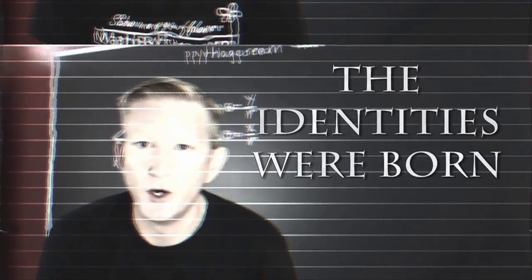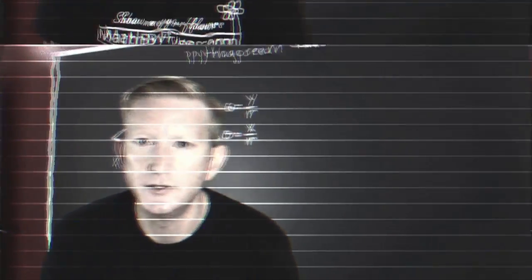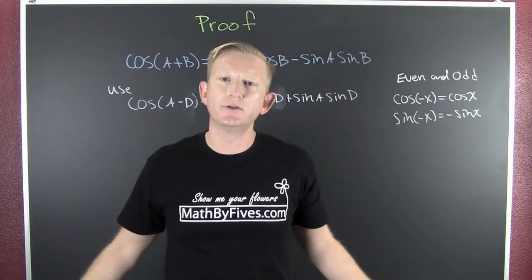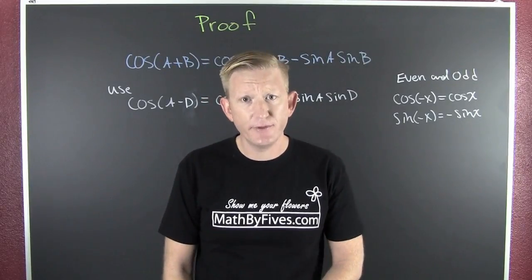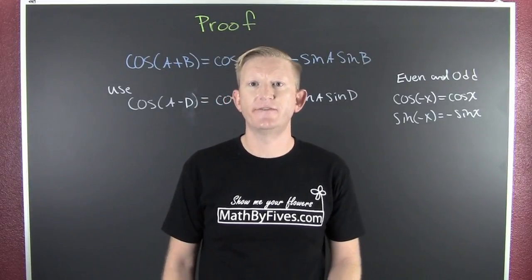And this is where the identities were born. And now you're wondering how to get to the cosine of the sum of angles after we've shown the cosine of the difference of angles.